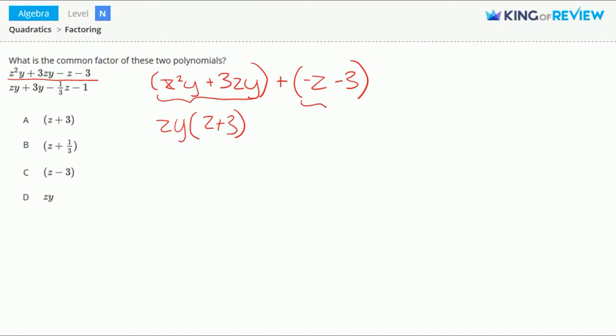Now, let's factor this portion here. What can we factor out? We can factor out a minus 1. This gives us minus 1 times z plus 3.